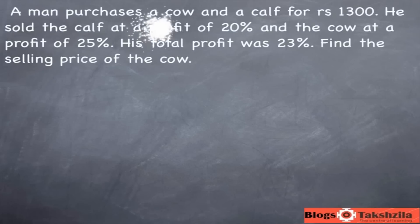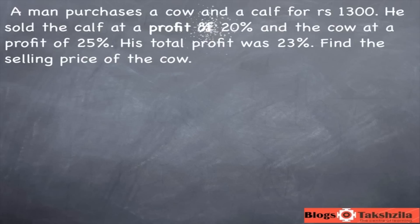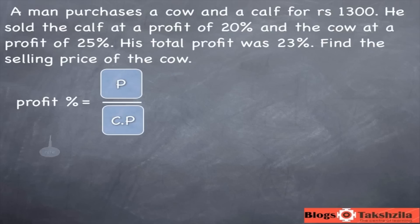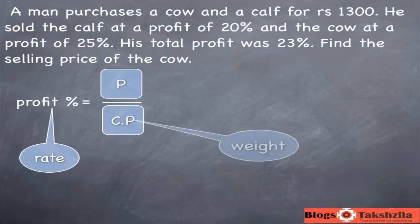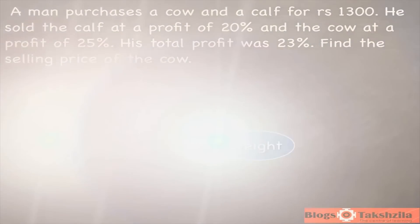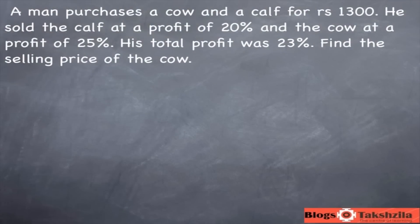For this one, draw the scale first of all. He says a profit of 20% and a profit of 25%. Profit percentage is profit by CP — it's a rate. That means the weight for each situation would be the cost price for each rate. So put the rates on the side: 20% and 25%.